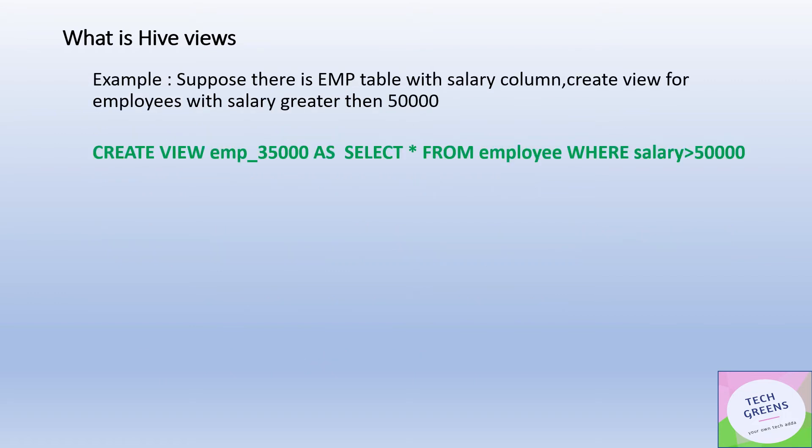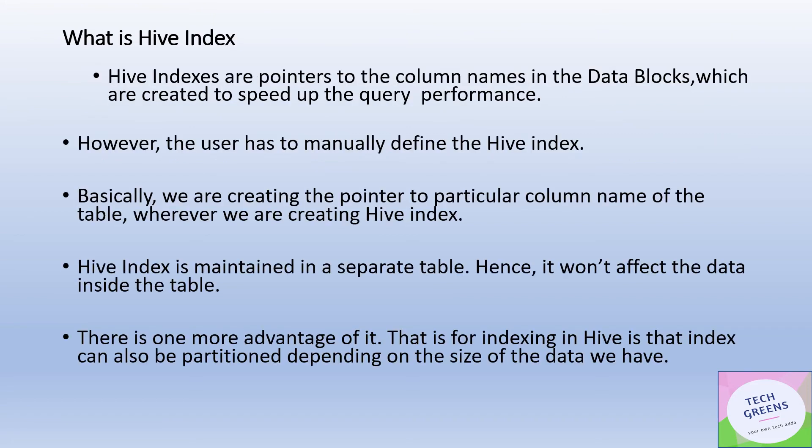Let's see an example. If you want to create a Hive view, the command is: CREATE VIEW view_name AS SELECT — this is what you want to select the data from. In the example, we are creating a view from the table 'employee' where salary is greater than 50,000. This is the syntax we use to do the same.